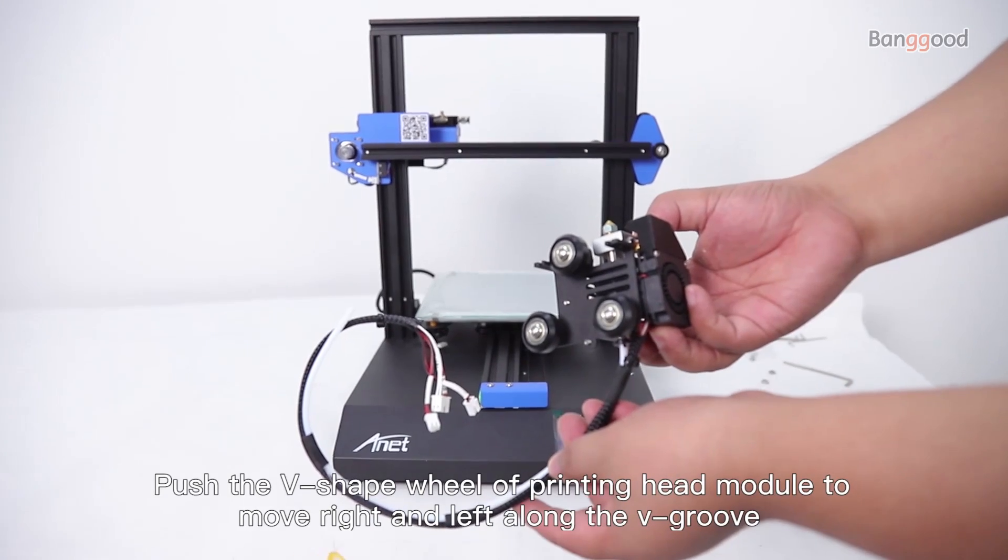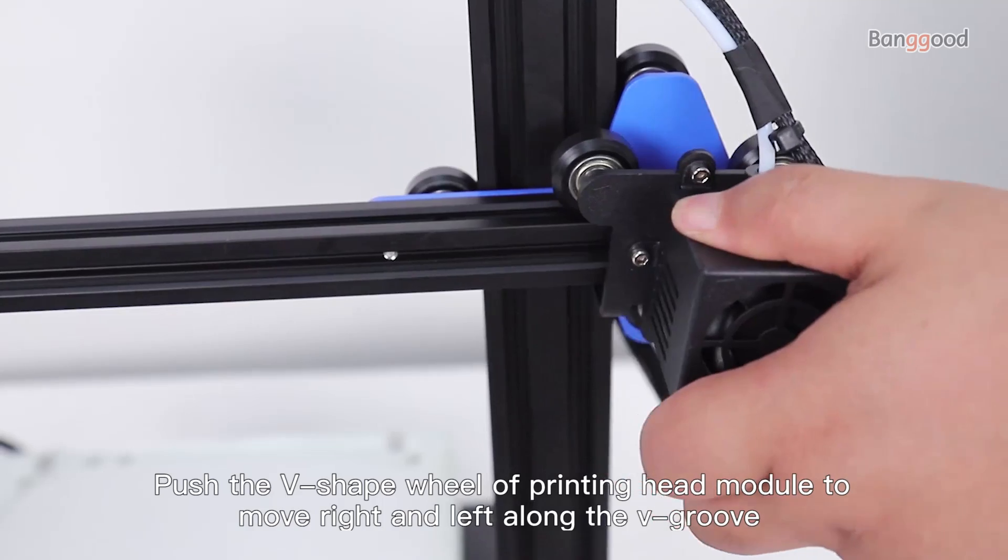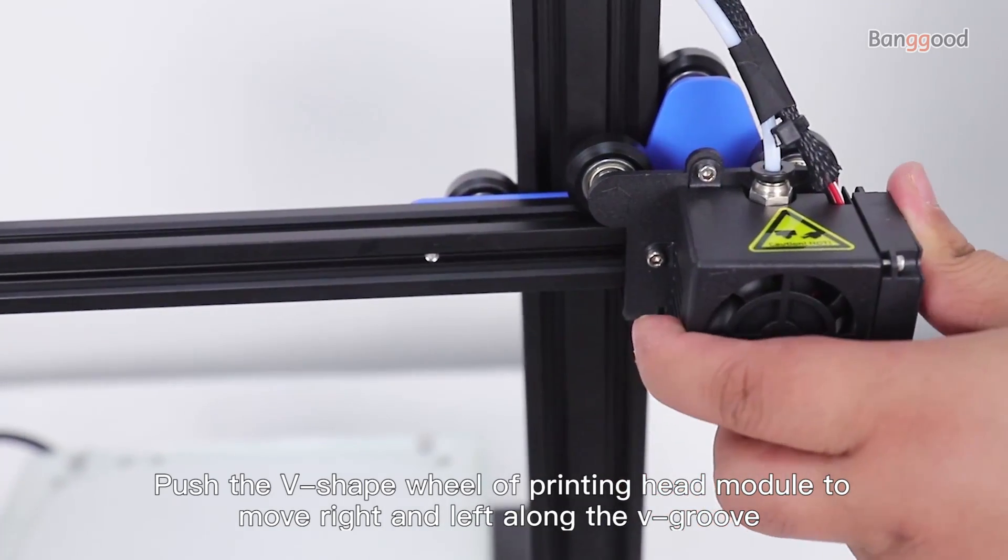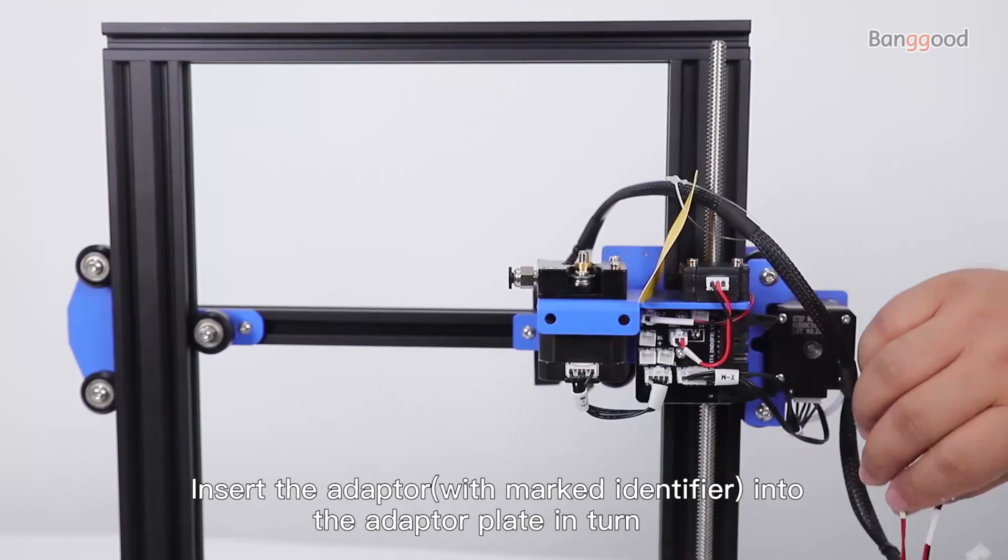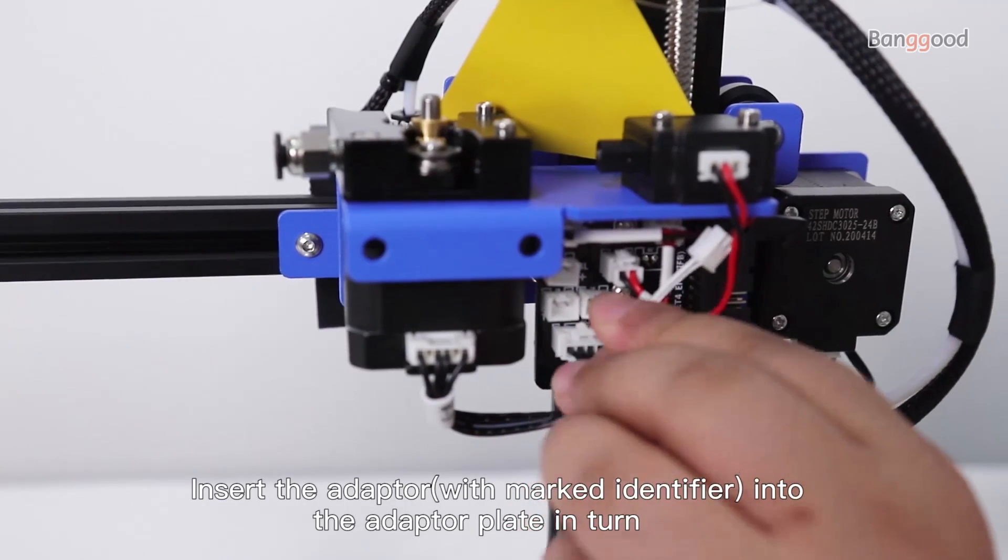Push the V-shaped wheel of the printing head module to move right and left along the V-groove. Insert the adapter into the adapter plate in turn.